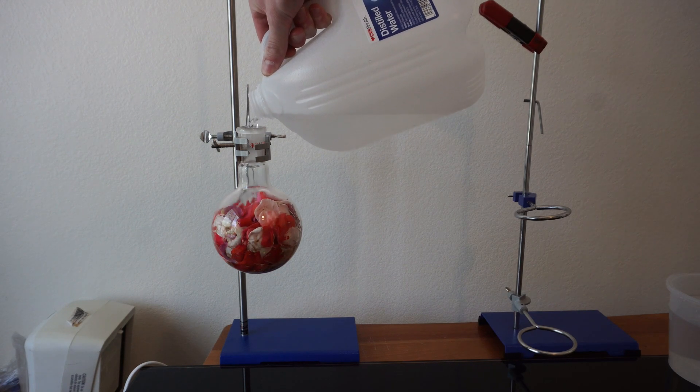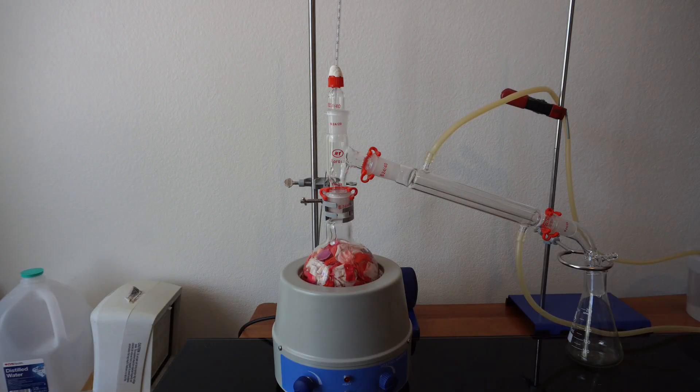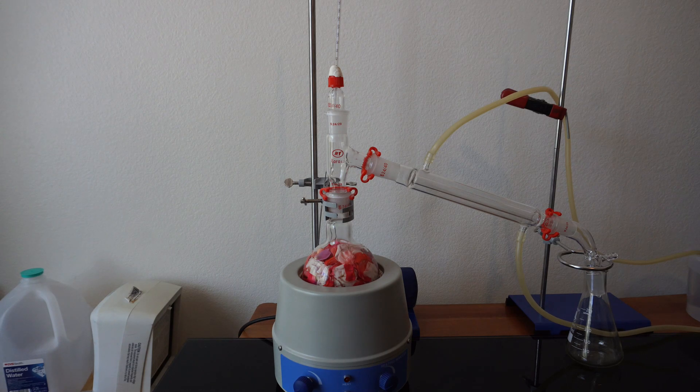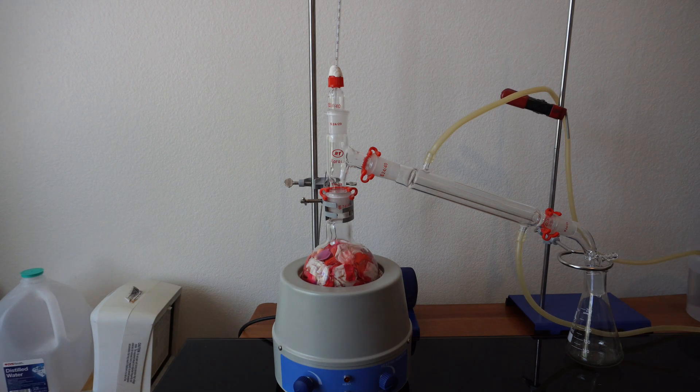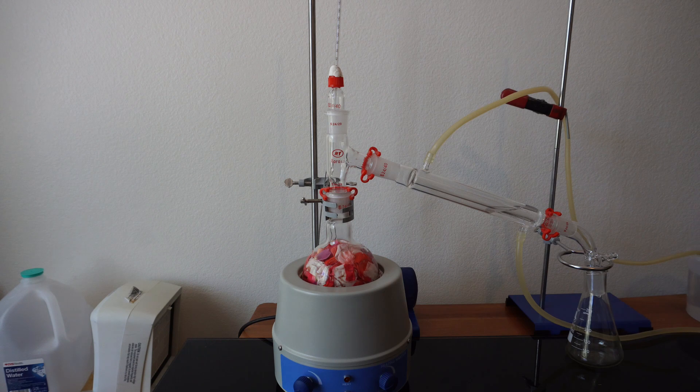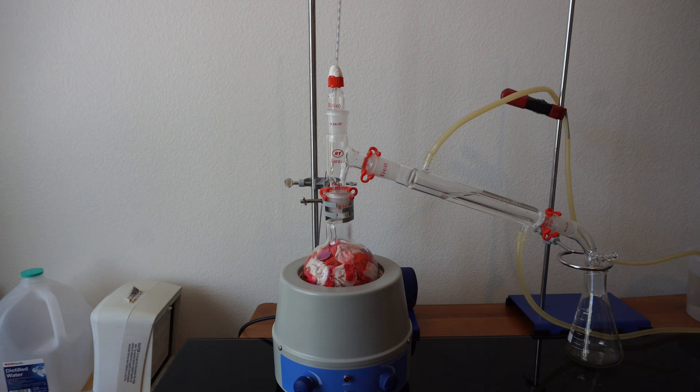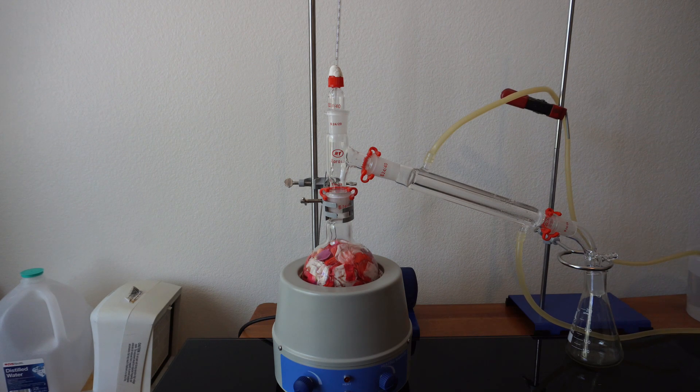Luckily, my neighbor grows roses, so she lent me some for this video. We picked all the petals from the roses and added them to the boiling flask, followed by just enough water to cover the petals. We then set up our still and filled the condenser with cold water, followed by turning on the heating mantle.